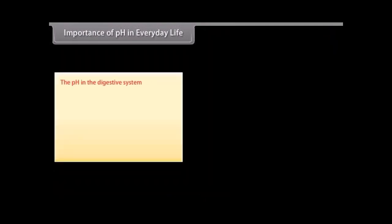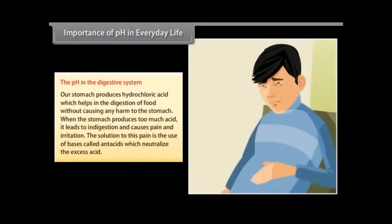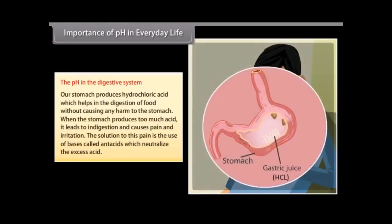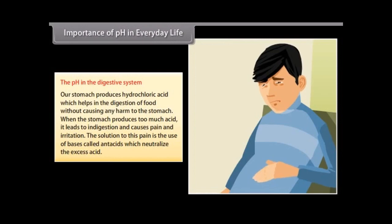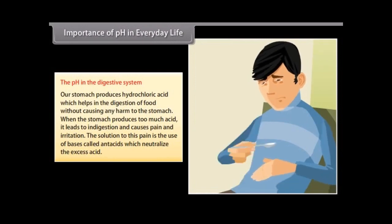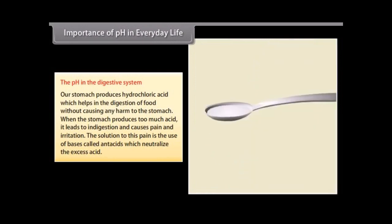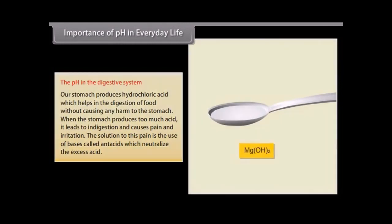The pH in the digestive system. Our stomach produces hydrochloric acid which helps in the digestion of food without causing any harm to the stomach. When the stomach produces too much acid it leads to indigestion and causes pain and irritation. The solution to this pain is the use of bases called antacids which neutralize the excess acid.